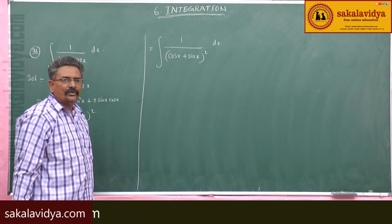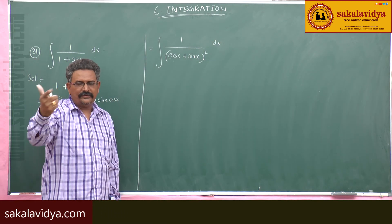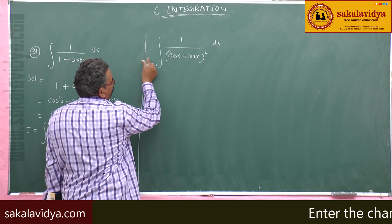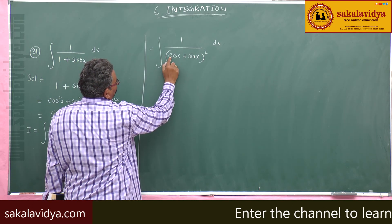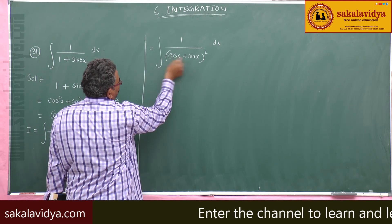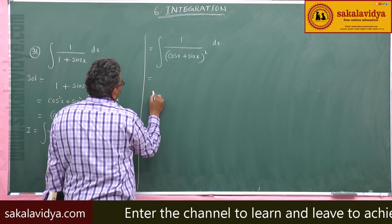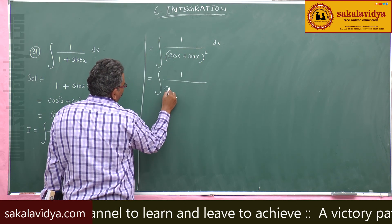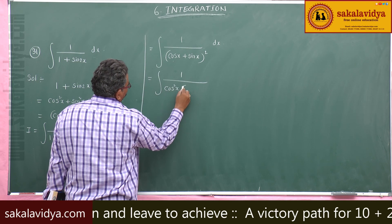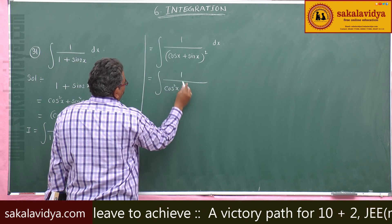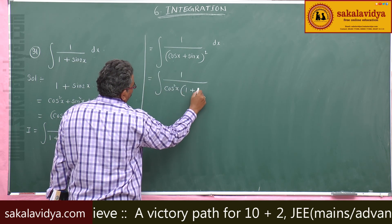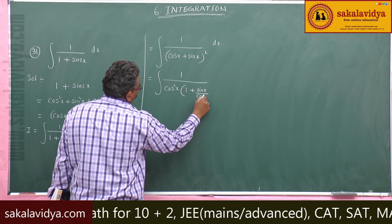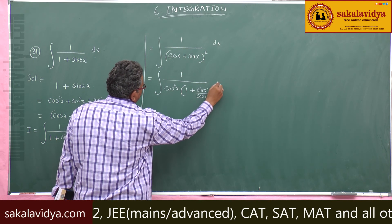Let i equal to integral of 1 by 1 plus sin 2x dx. This is replaced by the simplified value. So this is equal to integral of 1 by cos x plus sin x whole square dx. Now, how shall we proceed further? Take cos x common. If you take cos x common, you will be getting cos square x taken out, giving 1 by cos square x times 1 plus sin x by cos x whole square dx.